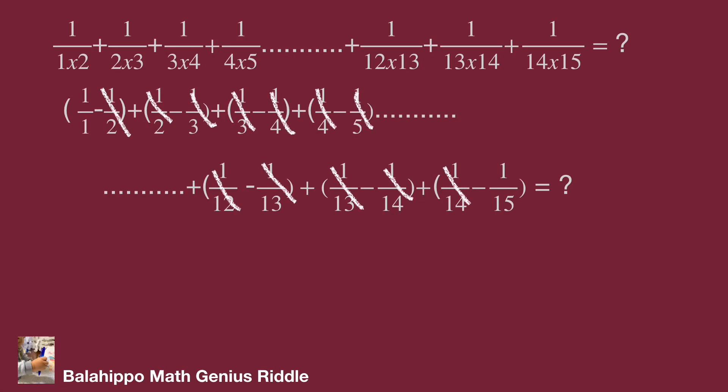Then eliminate values summing to 0. It comes up 1 minus 1 over 15 equal to 14 over 15. That's the answer.